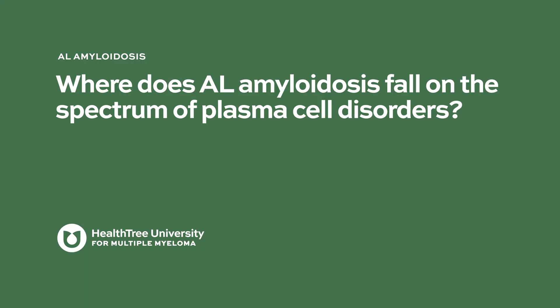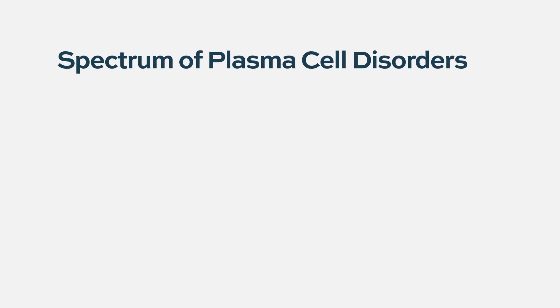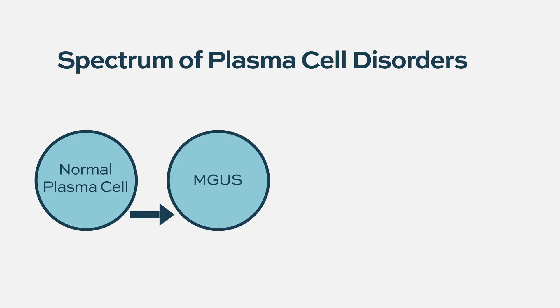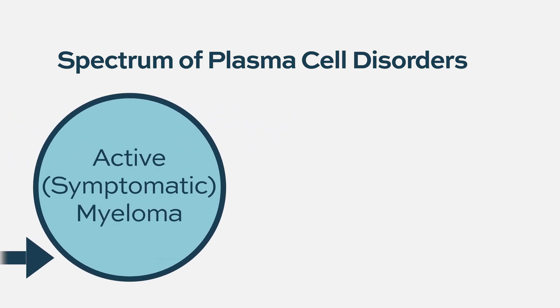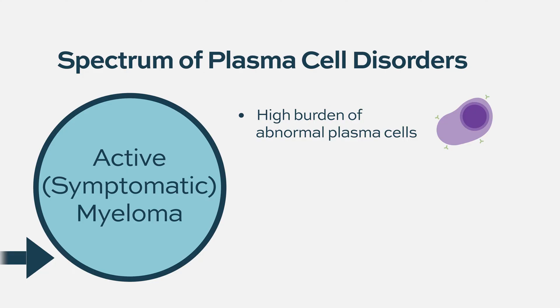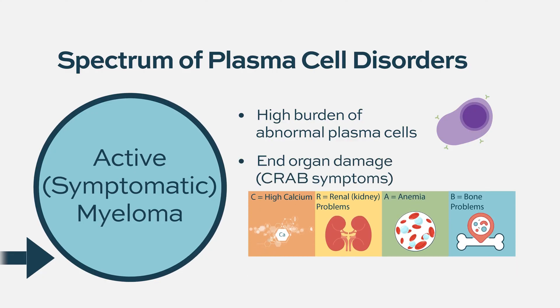Where does AL amyloidosis fall on the spectrum of plasma cell disorders? That's a great question and I think it's confusing to a lot of people, because plasma cell disorders are really a spectrum that ranges from MGUS to symptomatic multiple myeloma. Starting with symptomatic multiple myeloma, a patient not only has a high burden of plasma cell disease in the bone marrow and an abnormal protein in their blood or urine, but they also have end organ damage attributable to those plasma cells or the protein.